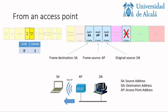What happens in the opposite direction, when the destination replies to the source? In the first address, we now have the source address, because this is the next step in the mobile communication. In the second address, we have the access point address, because that is where the frame is currently located. The third address is the other address involved — in this case the destination address. The fourth field is again not needed, since we only have three addresses.